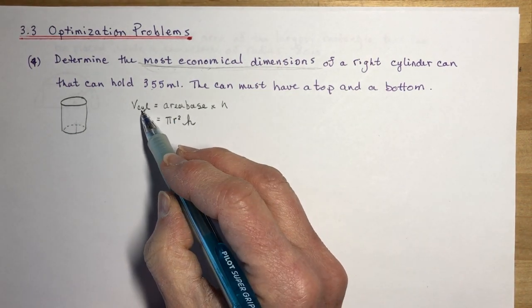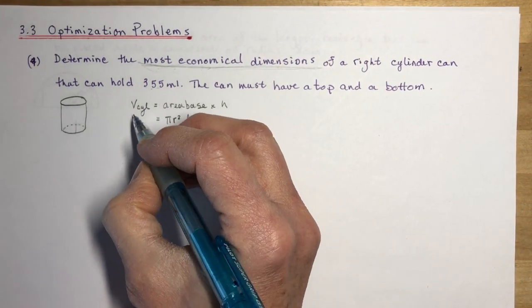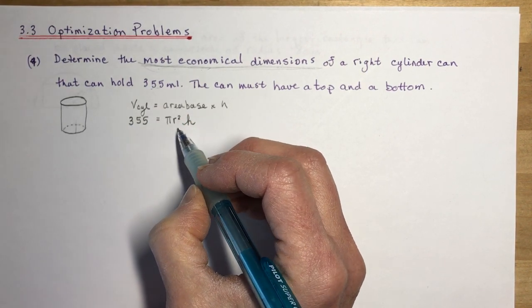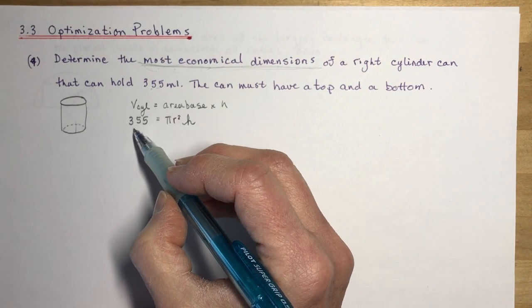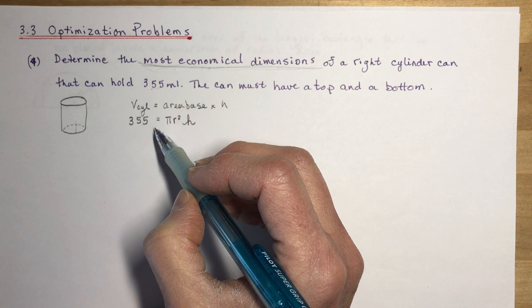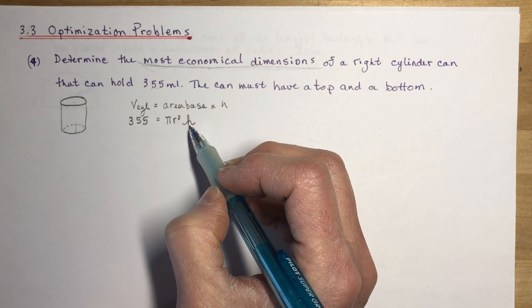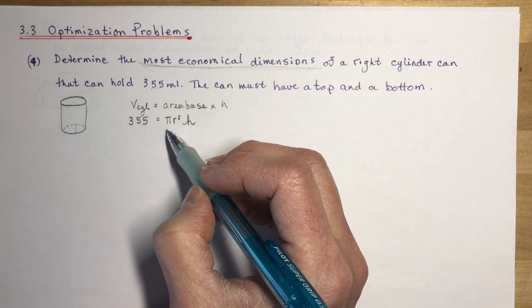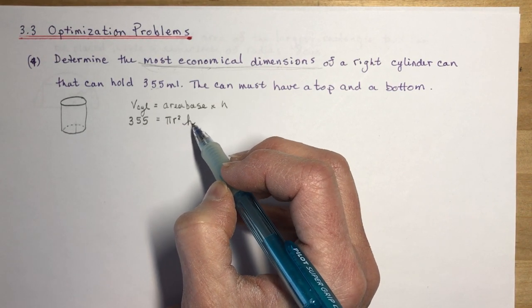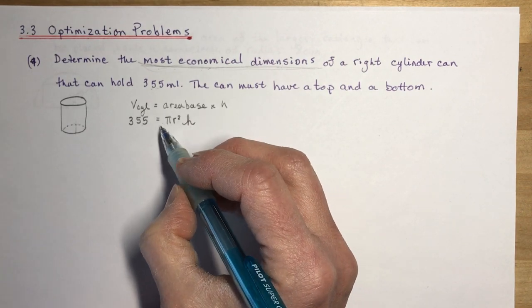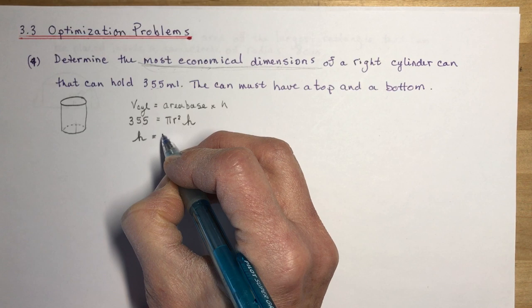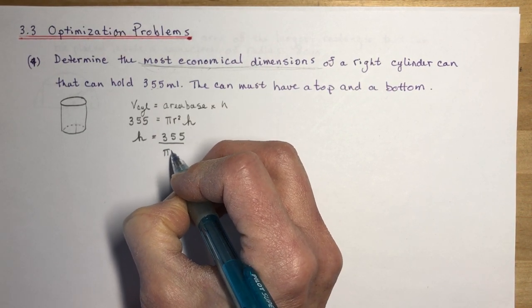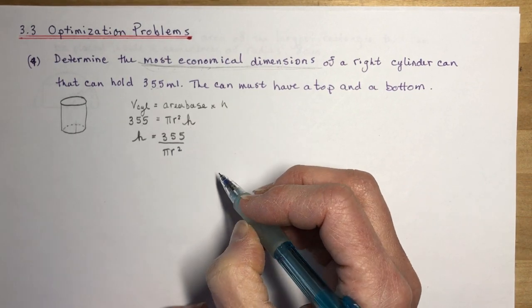We know the volume of the cylinder is 355 mils, so we place that on the constraint side of the equation. We're not making a 700 mil can — just 355 mil. If I express h in terms of r, I get h = 355 / (πr²). Remember, π is just a constant number, not a variable.